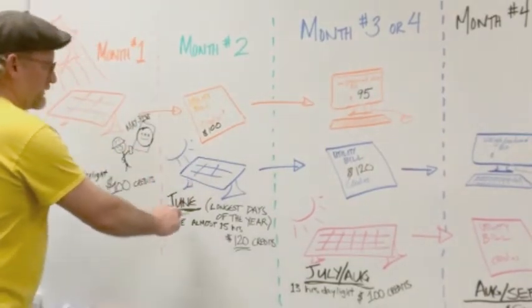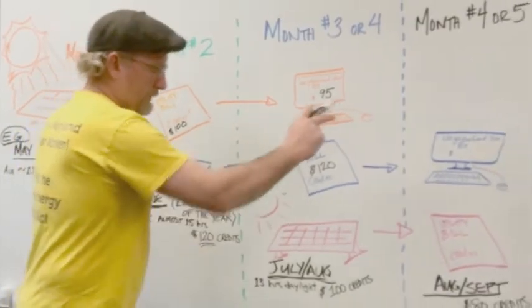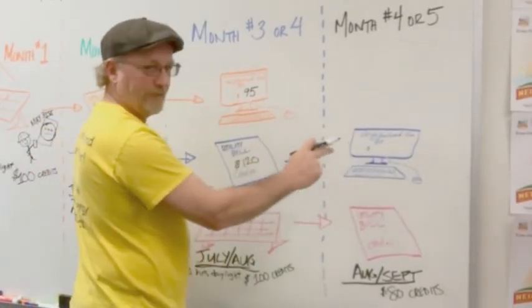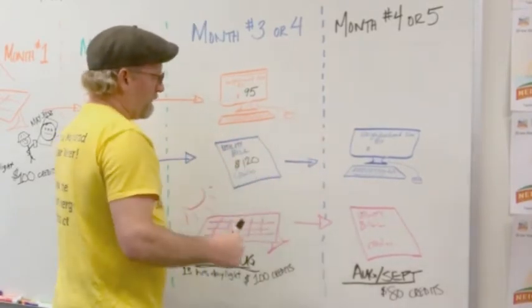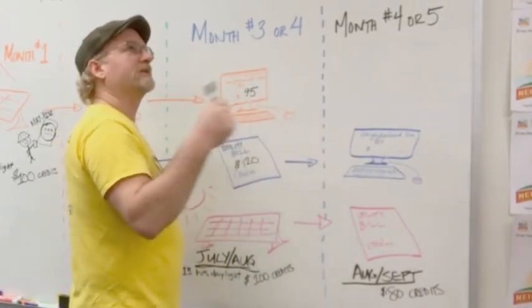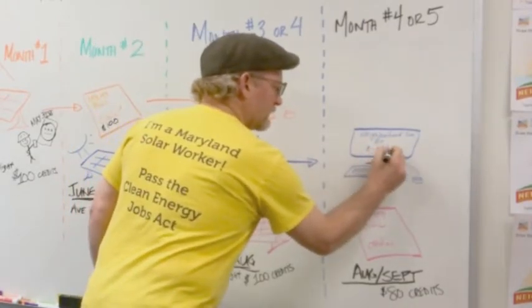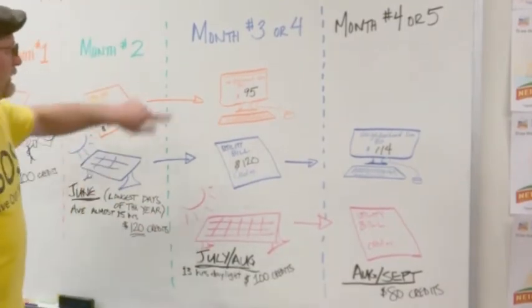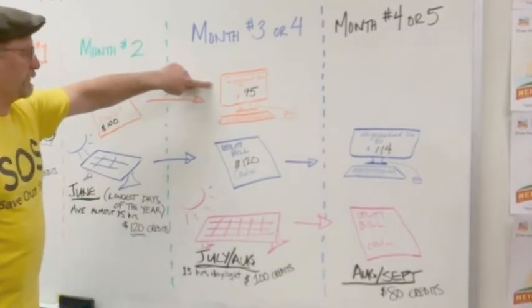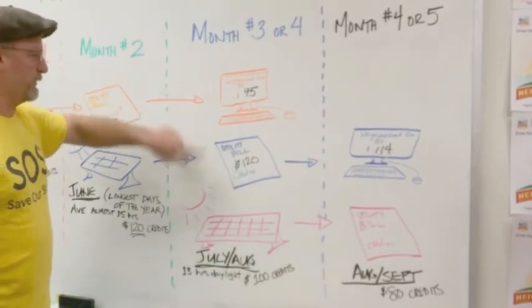Likewise, this $120 in credits that you're getting in month number three or four, it's not going to show up on Neighborhood Sun until month number four or month number five. And 5% off $120 is $6 off. So that's $114. This is why we get people who say, hey, my Neighborhood Sun bill was for $95, but my credits were for $120. Why are those numbers so different?